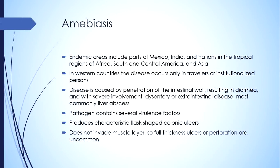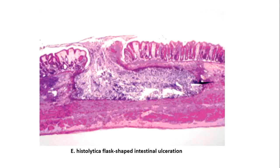First, the mucinous barrier of the colon is lost so that the amoeba comes into direct contact with the epithelium. There are several mechanisms by which it can induce necrosis or apoptosis in the epithelial cells and enter the epithelium to reach the sub-epithelium. In the submucosa it can spread laterally to make the characteristic flask-shaped ulcers with a broad base and narrow neck. The infection usually stops at the muscularis layer, so full-thickness ulcers and perforation are very uncommon. This pathology shows the characteristic flask-shaped ulcers with narrow neck and broad base, stopping at the muscularis layer.